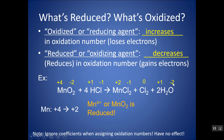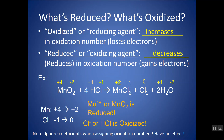Oxygen goes from minus two to minus two — no change. H goes from plus one to plus one — no change. Some Cl atoms stay at minus one, but other Cl atoms go from minus one to zero — going up in oxidation number, so that is oxidized. OIL RIG. Cl⁻ or HCl, the way it appears on the left, is oxidized.